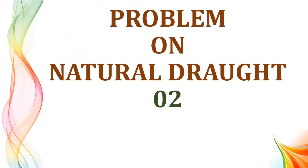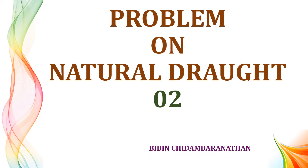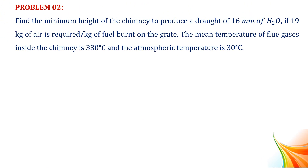Welcome to this session on solving problems on natural draught. Problem 2: Find the minimum height of the chimney to produce a draught of 16 mm of water, if 19 kg of air is required per kg of fuel burned on the grate. The mean temperature of the flue gases inside the chimney is 330 degrees centigrade and the atmospheric temperature is 30 degrees centigrade.